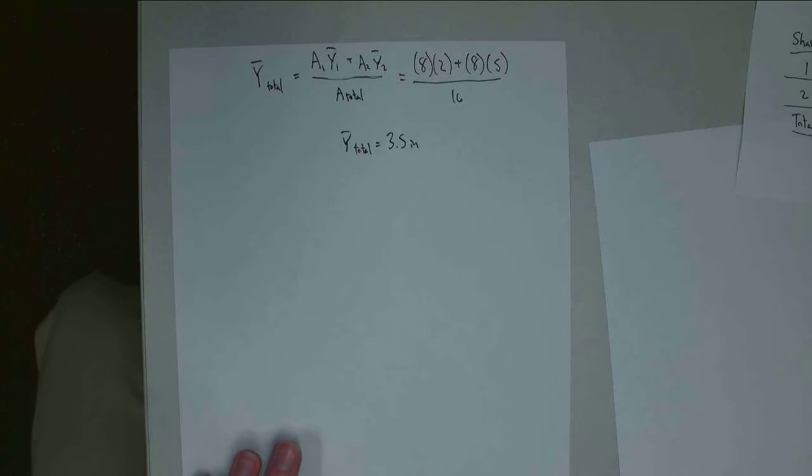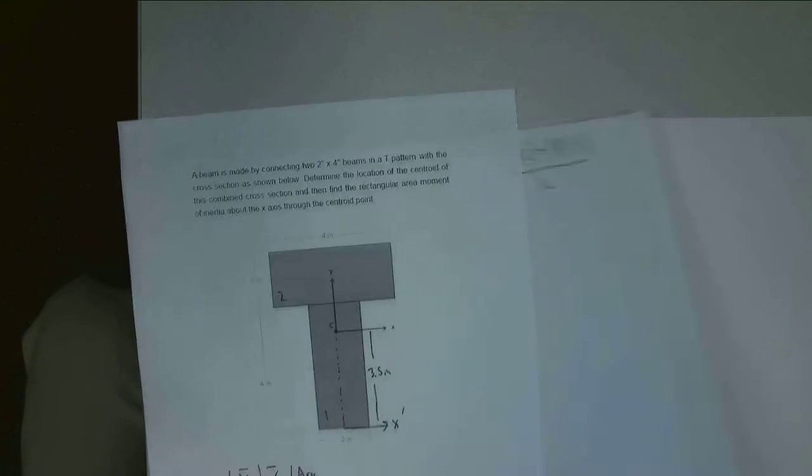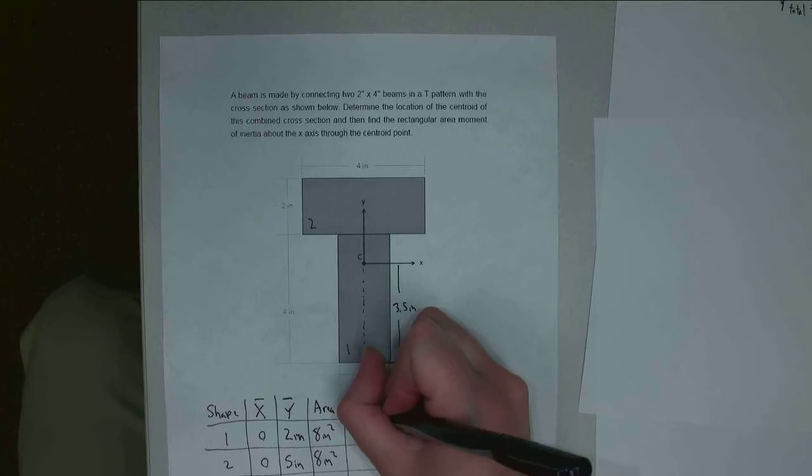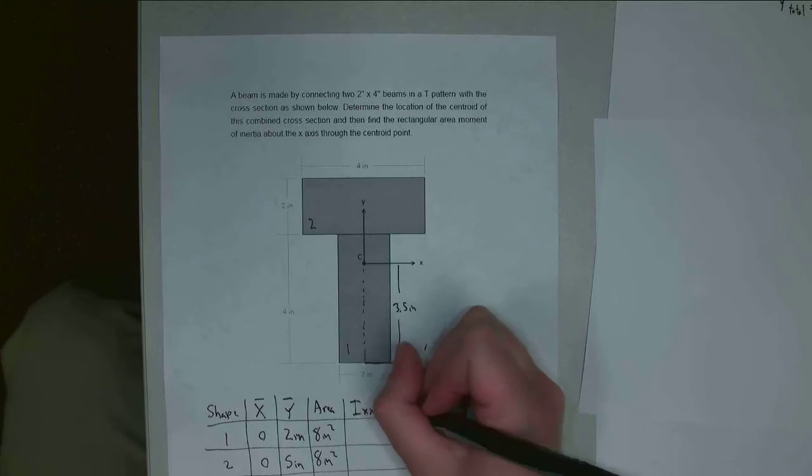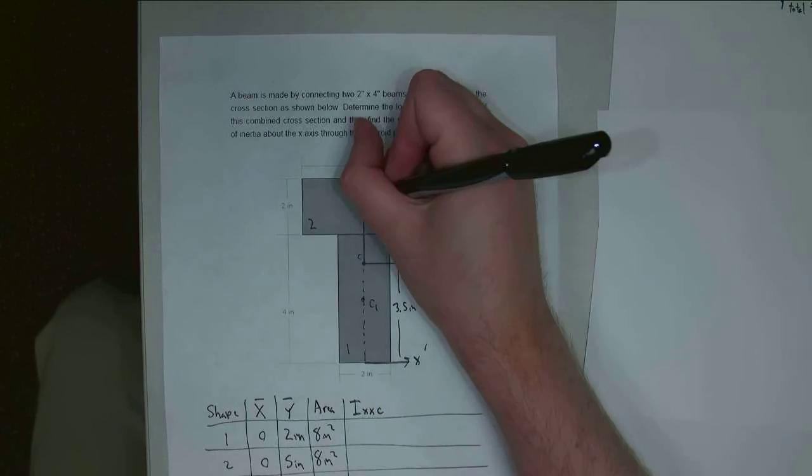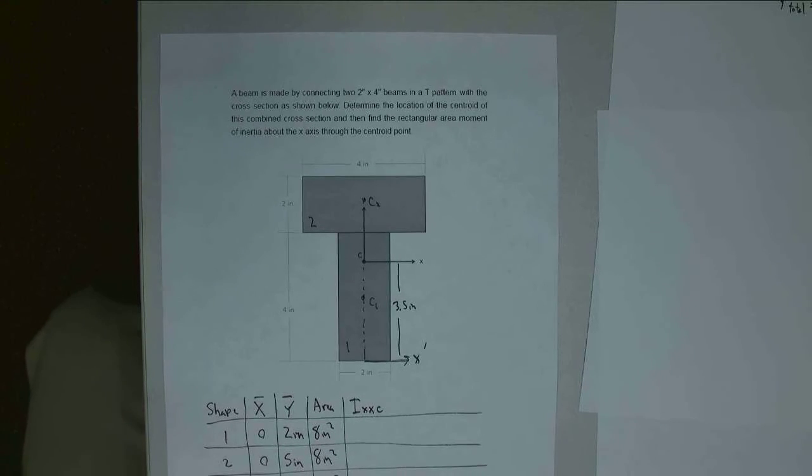Alright, so next we need to find the moments of inertia. And so to do that, we're going to create another column. This is going to be IXX about the centroid of each shape. And so this is like C1, this would be C2. So this is the unadjusted version.